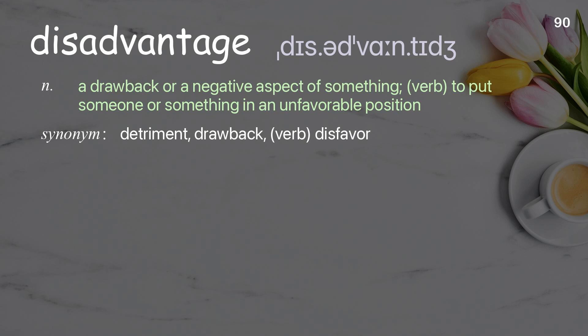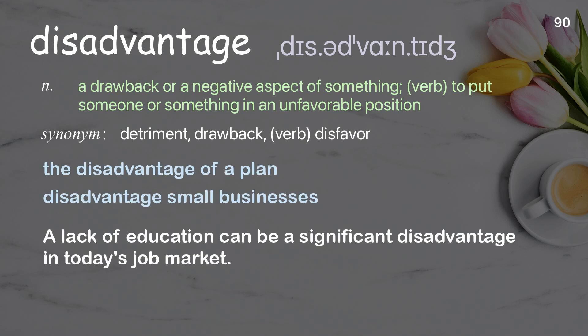Disadvantage: a drawback or a negative aspect of something. Verb: to put someone or something in an unfavorable position. A lack of education can be a significant disadvantage in today's job market.